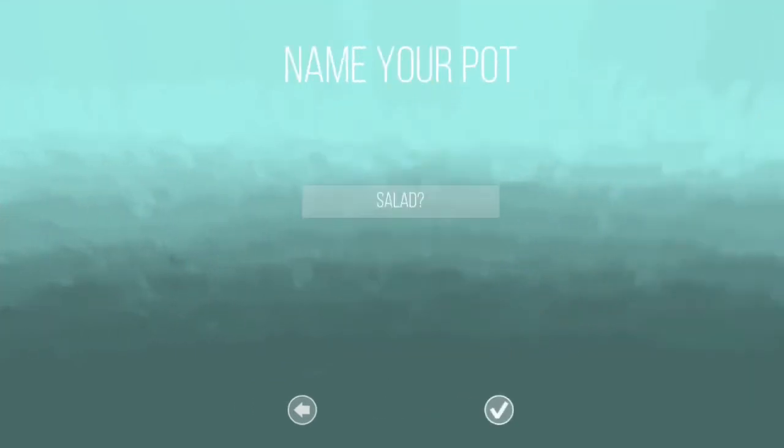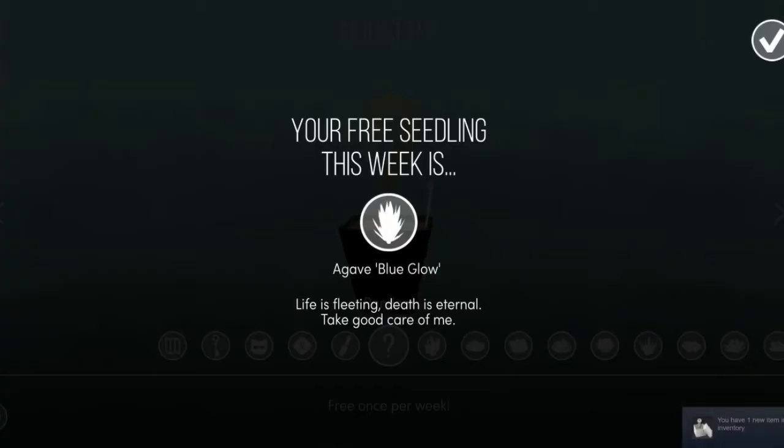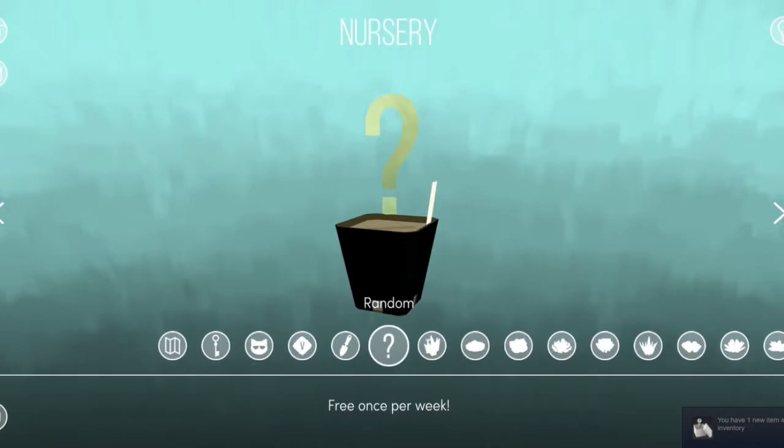Then name it, water it and watch it grow. You get a free seedling each week so you can add more plants to your pot and you need to weed it to make sure all your plants will grow okay.